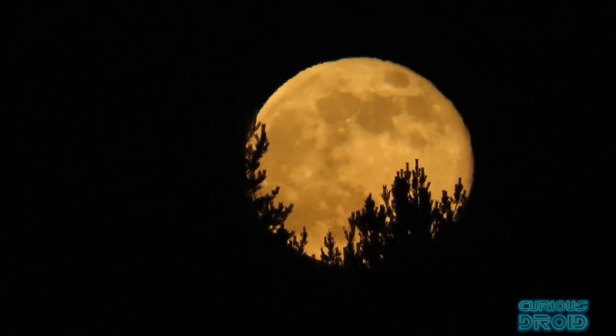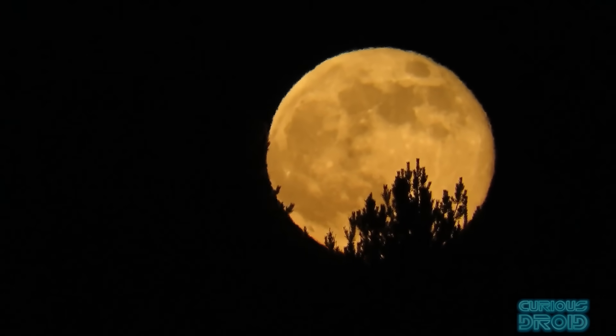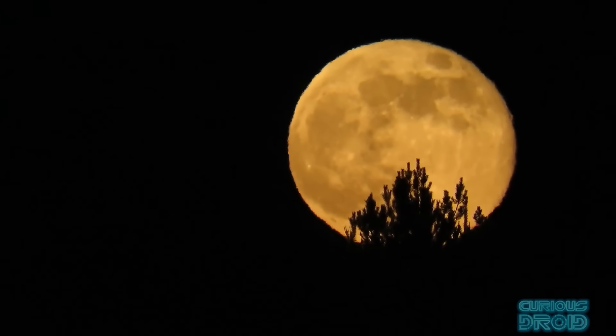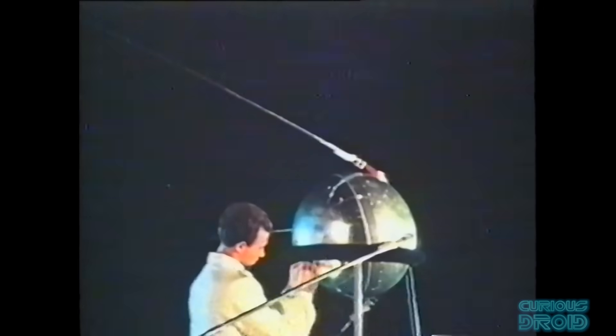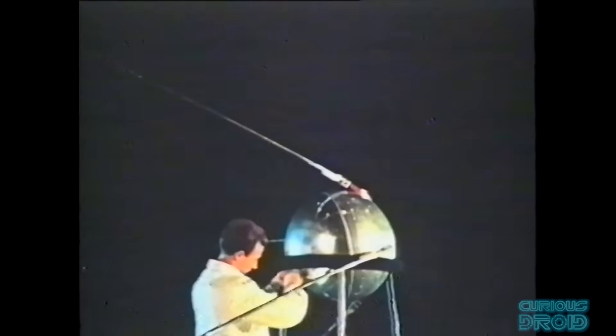On the 3rd of October 1957, the earth had one satellite, the moon. On the 4th of October 1957, it had two with the addition of the Soviet Sputnik 1.